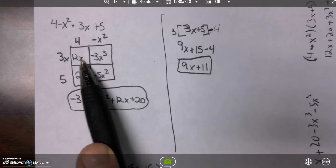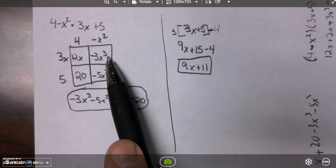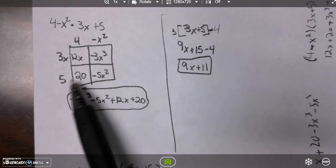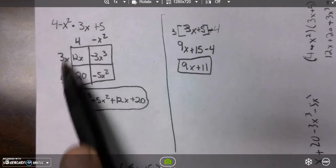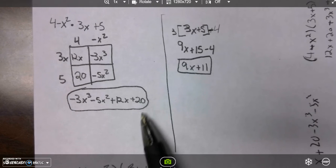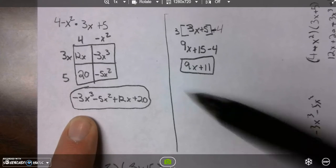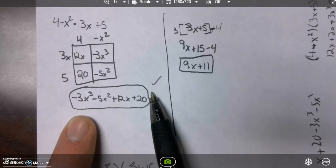So 4 times 3x is 12x. Negative x squared times 3x is negative 3x cubed. 4 times 5 is 20, and negative x squared times 5 is negative 5x squared. That is all good. It turns out none of those terms are like terms and combined, so any order in which you write these four terms works. I believe this is the correct answer for f times g of x.